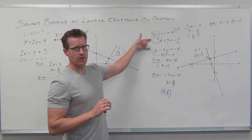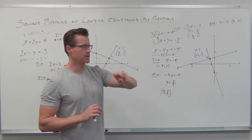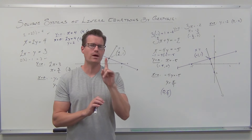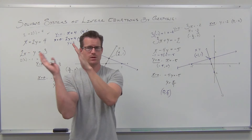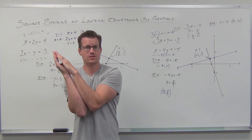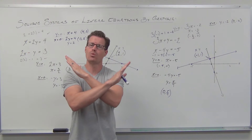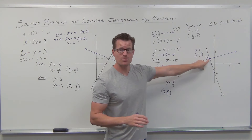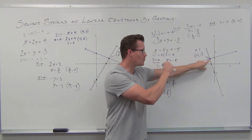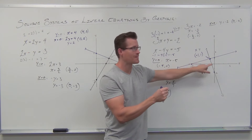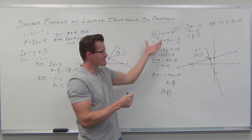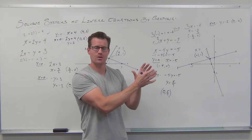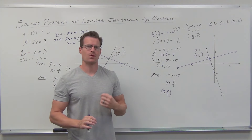Systems of linear equations mean two lines for us. We have our two lines, and the solution is the one point where they intersect. If they don't intersect, there's no solution. If they're the same line, there are infinite solutions. That one intersection point has the same x-coordinate and the same y-coordinate on both lines, meaning you can plug in the same x and y and it works in both equations. We can do it by graphing, but there are more effective ways.